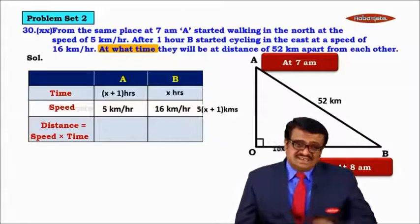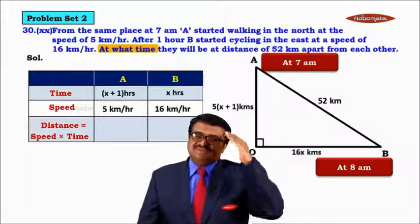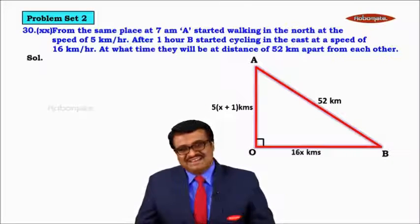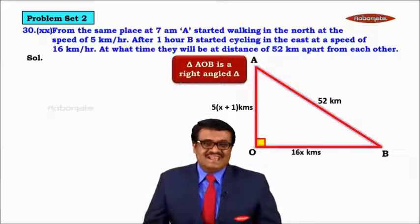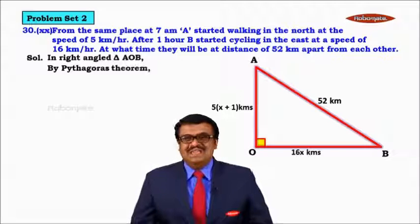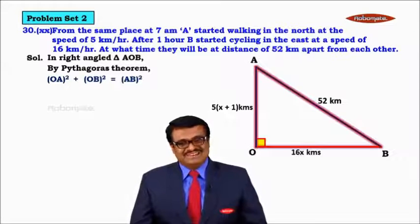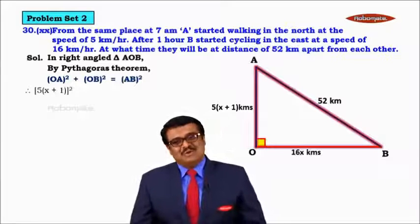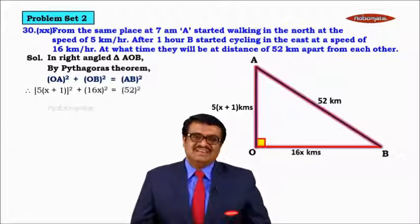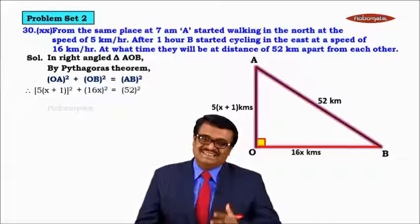Since triangle OAB is a right-angled triangle, we can use the Pythagoras theorem. By Pythagoras theorem: OA² + OB² = AB². Substituting the values: [5(X+1)]² + (16X)² = 52². We have formed the equation. How to solve it, we will see in the next video.